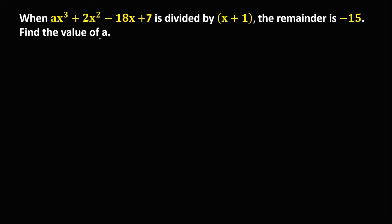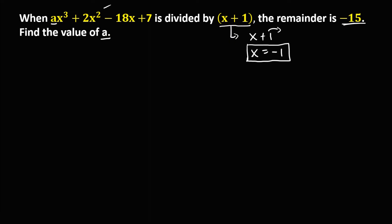For this next problem, we need to find the value of a. If this equation is divided by x plus 1 and the remainder is negative 15, then from x plus 1 we solve for x by transposing, giving x equals negative 1. We have f of x equals a times x to the power 3 plus 2x to the power 2 minus 18x plus 7.